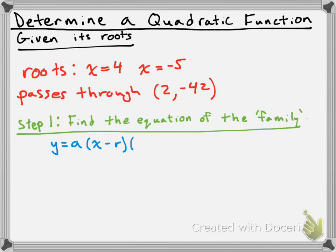To do that, we need to think back to factored form of a quadratic function. Factored form looks like the following: y equals a times x minus r times x minus s. Remember that r and s are the values of our roots. Factored form has a leading coefficient 'a' and the two roots inside the factors.